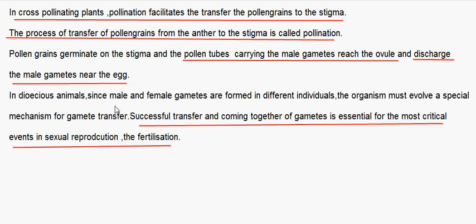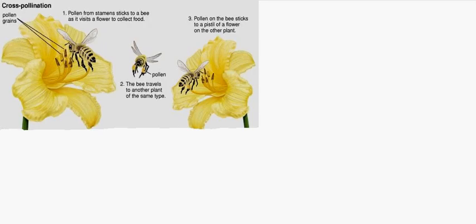In dioecious animals, since male and female gametes are formed in different individuals, the organism must evolve a special mechanism for gamete transfer. Successful transfer and coming together of gametes is essential for fertilization — the most critical event in sexual reproduction. In cross-pollination, bees act as agents for pollination and deposit pollen grains on the stigma.